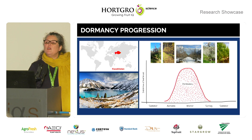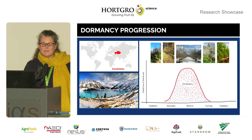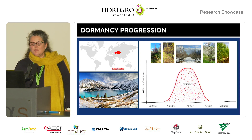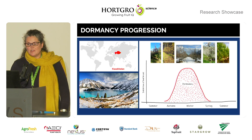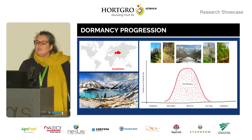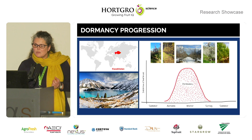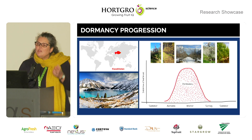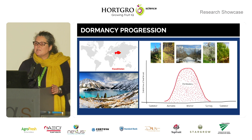A bit of an overview on dormancy progression with a specific focus on apples. Apples originate from Kazakhstan, which is in the middle of the world, and they are well adapted to withstand really harsh winter conditions. They do this by going dormant. During autumn, the meristems form bud scales, and all growth stops until winter passes and the buds accumulate sufficient chill.